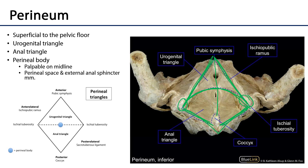Looking at the midline where it intersects with the interischial line, we are in the vicinity of the perineal body. The perineal body is a musculofibrotic condensation of tissues where the muscles of the urogenital triangle — the bulbospongiosis muscles as well as the transverse perineal muscles, both superficial and deep — come together with the external anal sphincter. All of these muscles and their fasciae interdigitate to form the perineal body.